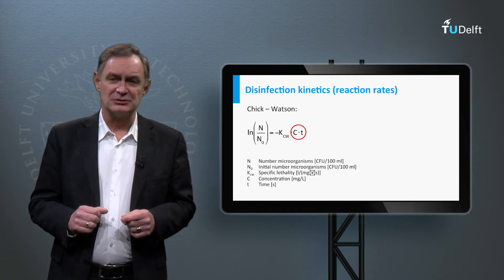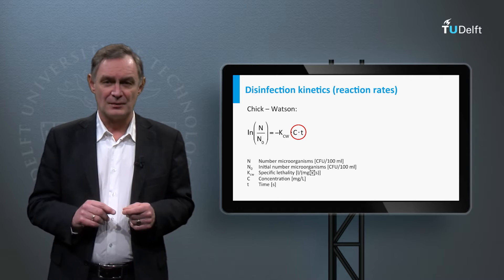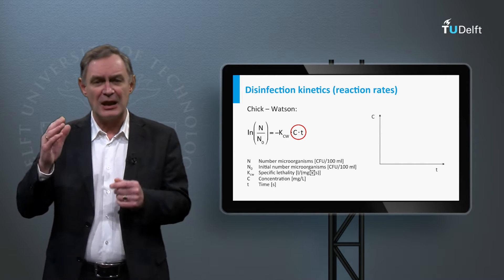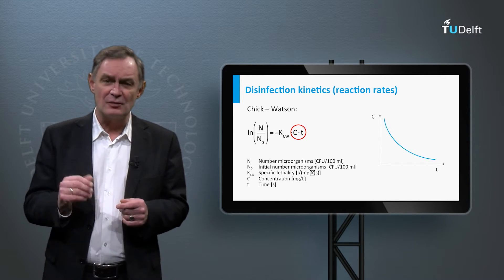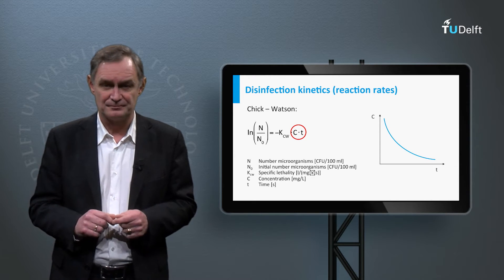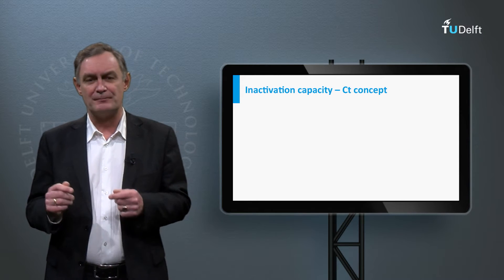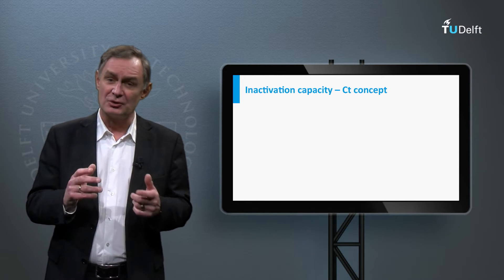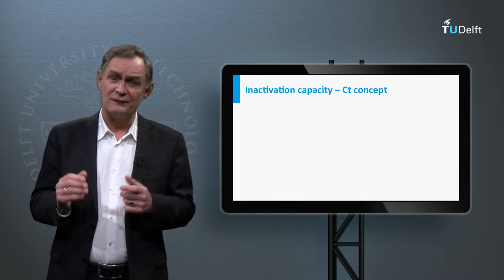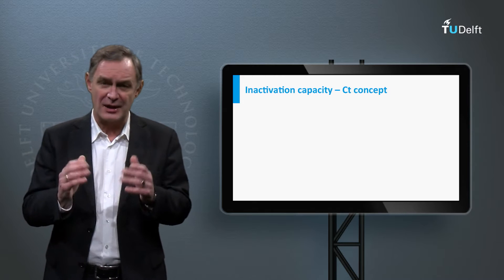Chemical disinfectants are oxidants reacting with components in the water. Therefore, the concentration of the disinfectant declines in time, which should be taken into account when calculating the real CT value. The CT value is used as a basis for estimating the degree of disinfection. So for a requested inactivation, a certain CT value is required.